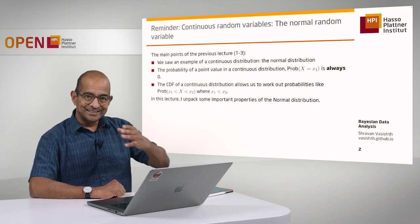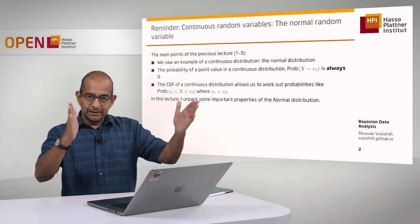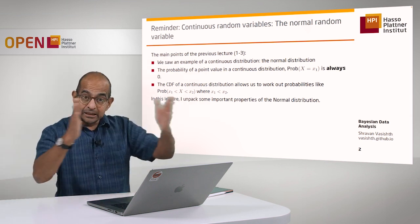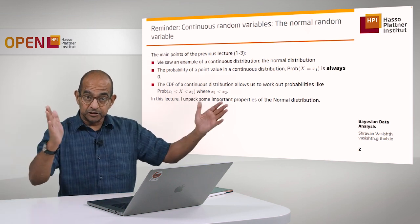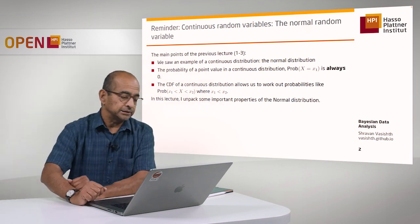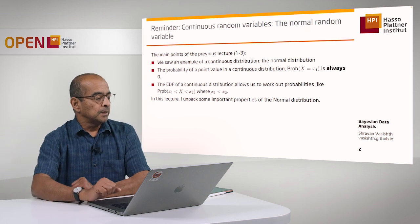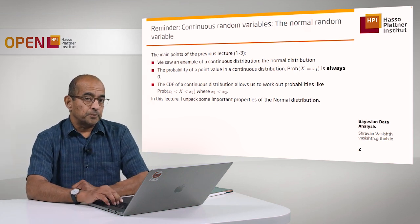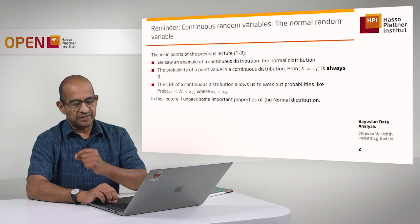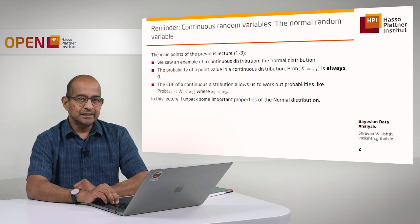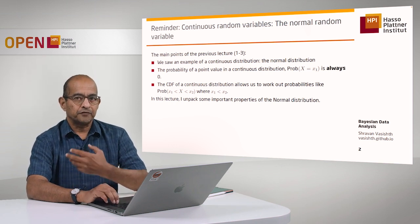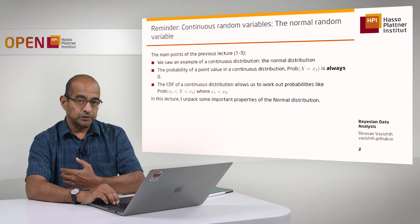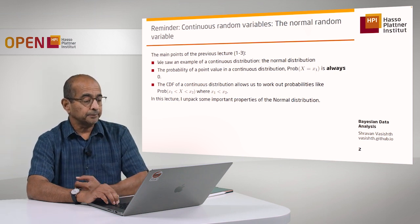The CDF of a continuous random variable will allow us to work out these kinds of probabilities — the area under the curve — by carrying out that summation in the continuous space, which is called integration. So let's unpack some of the important properties of the normal distribution. These are very important ideas to keep in mind when we start doing statistical modeling.